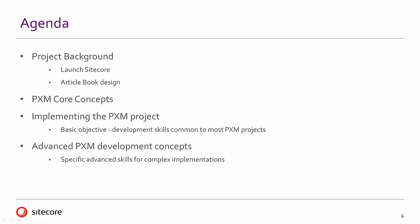For the agenda, first we'll get into the project background, so understanding an example use case. For this we'll be using two things: Launch Sitecore as the source of our content that will be used in the PXM project, as well as a book design which we'll be outputting the content into. We'll then cover the PXM core concepts, including architecture, and then we'll go through the steps of implementing the PXM project. Our basic objective is to use development skills common to most PXM projects in order to do a simple PXM output.